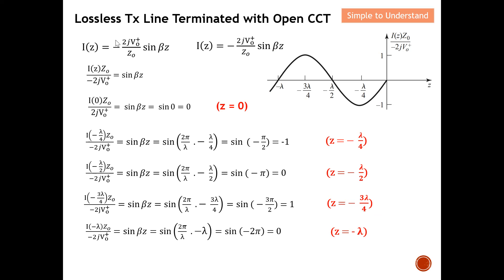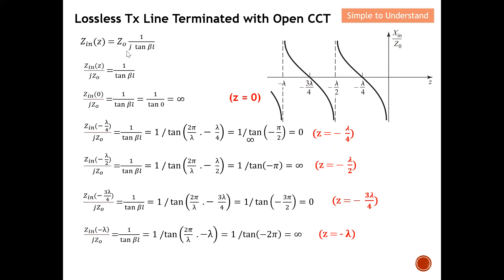We can also do this for current. This is the current equation under the second discussion. All these terms here can be shifted to the left-hand side to get this current equation. Again there will be five scenarios — I substitute all the z values and obtain all the results. From these I can quickly plot this current waveform.